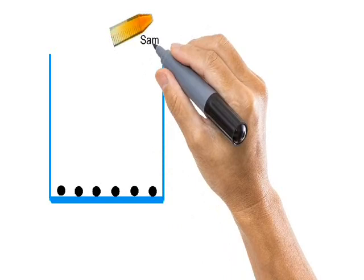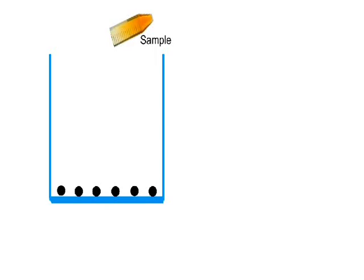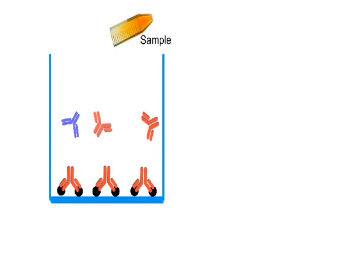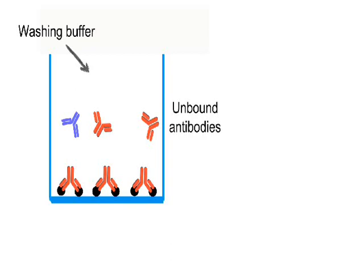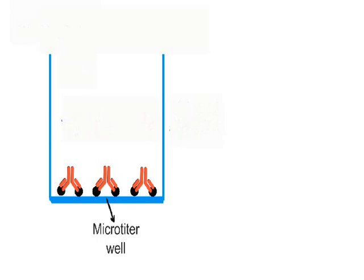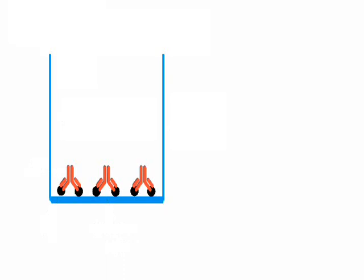After coating of antigen to the well, in the next step, the sample is added to the well. The sample really contains the anti-A antibodies, and the anti-A antibodies are going to bind the antigens because they are complementary to each other. But the sample may contain other antibodies also, and even the concentration of A antibodies may be higher than the antigen, so these excess antibodies will remain unbound. In the next step, we remove any unbound antibodies with the help of washing buffer, done at least three times. After washing, there will be a well coated with antigens and the anti-A antibodies from the sample bound to the antigens.